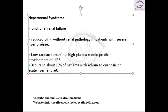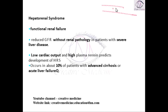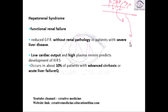Why is there reduced glomerular filtration rate due to liver disease? In acute liver disease there is hypoalbuminemia. Due to hypoalbuminemia, there is less osmotic pressure in the blood, so all the fluid in the blood starts to leak out. As a result, third space accumulations are seen in liver disease, like ascites.